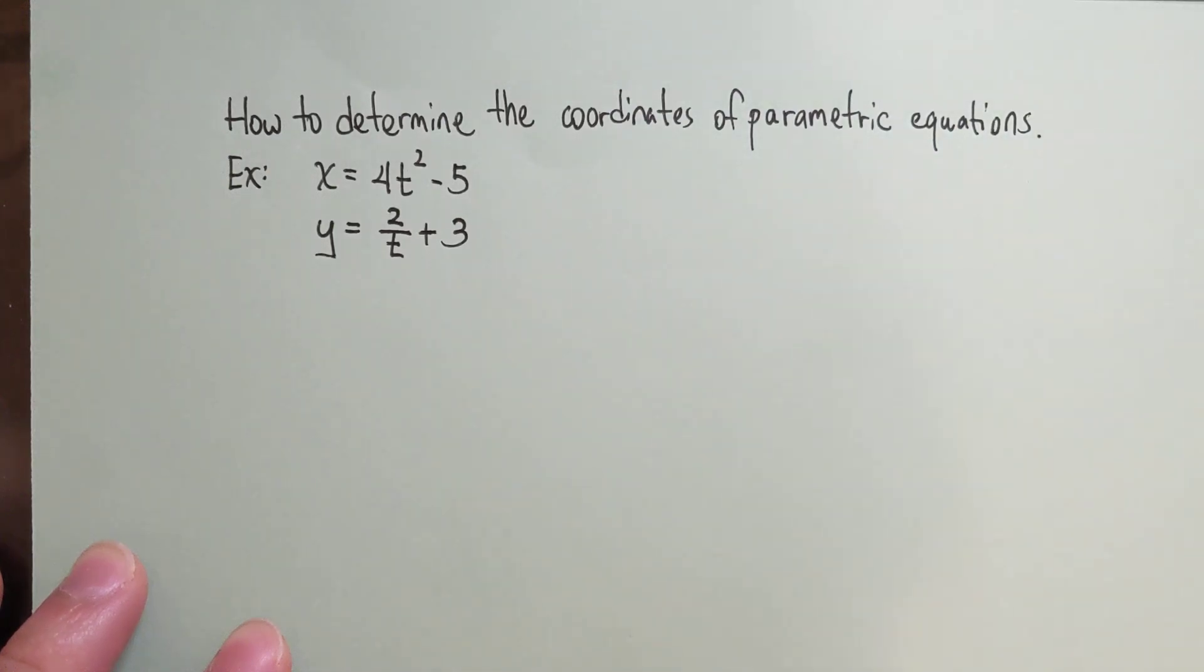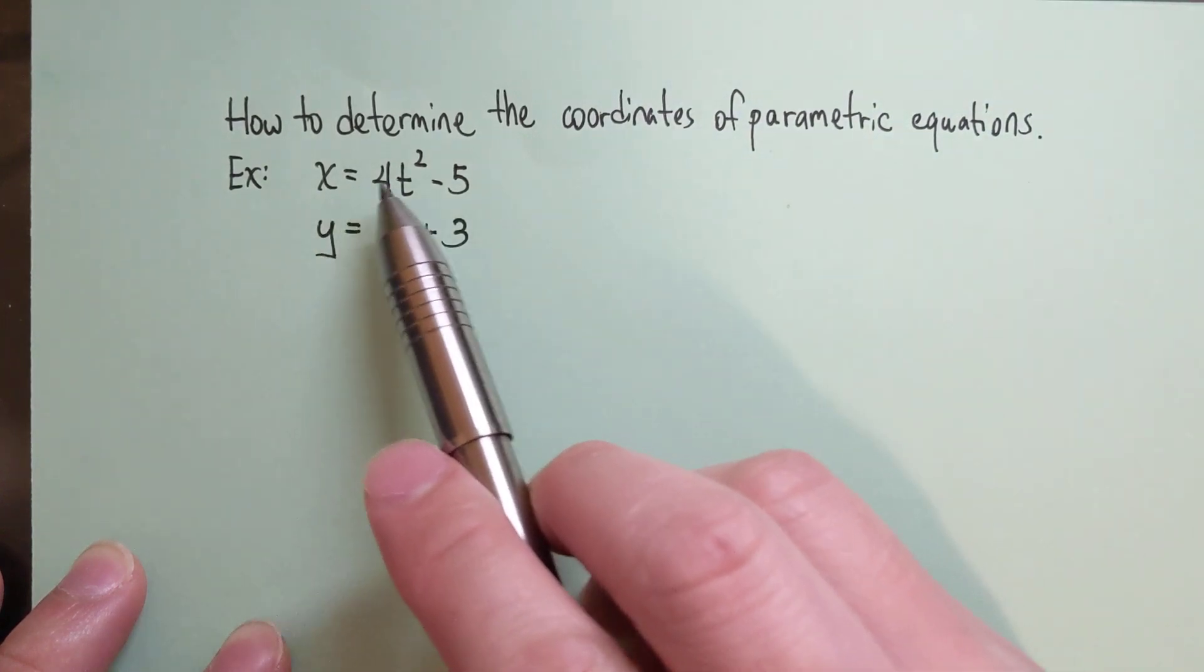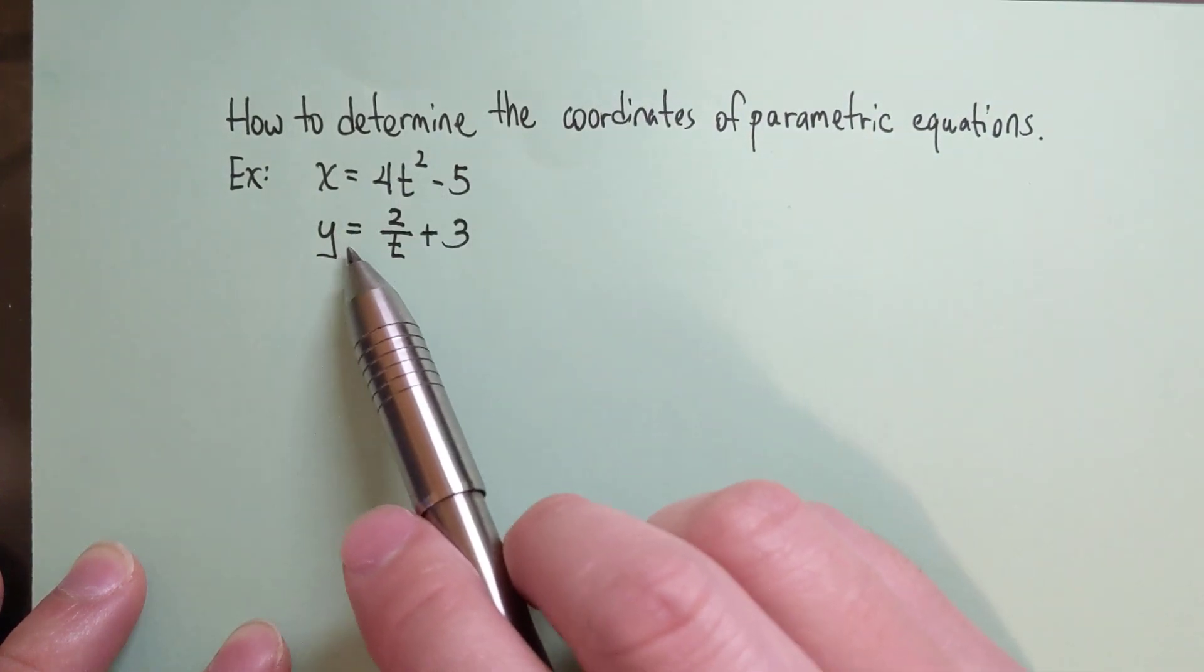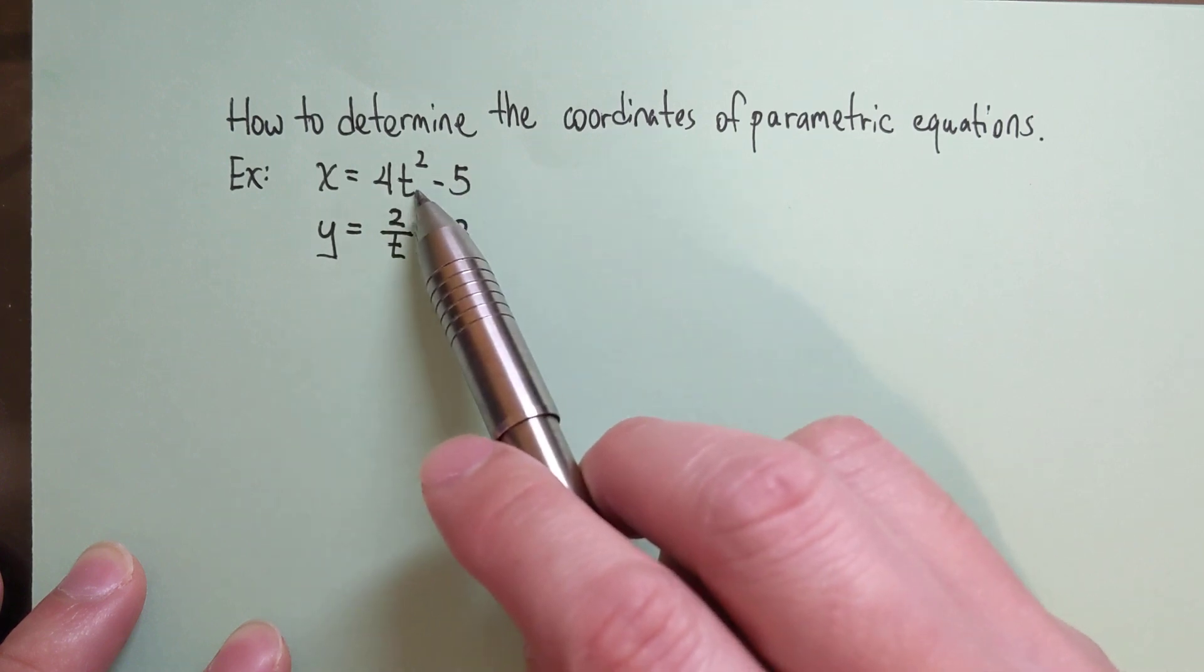Today we are going to talk about how to determine the coordinates of parametric equations. Parametric equations are x equals something and y equals something. The independent variable would now be t.